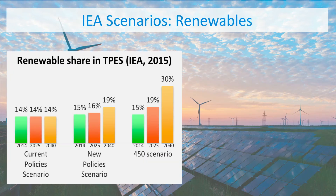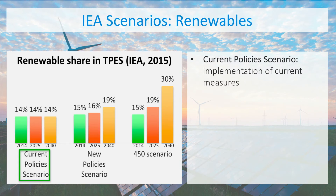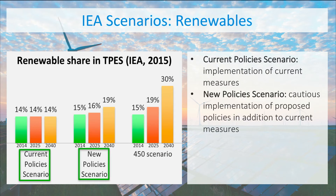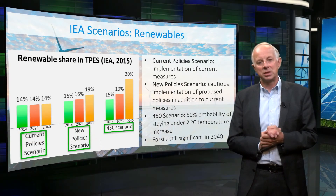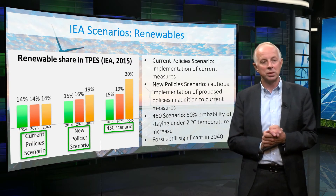Let's look at what happens to renewable energy. In the current policy scenario, the share of renewables sticks at 14% of the total primary energy supply all the way to 2040. In the new policy scenario, we notice a decent increase in the share of renewables to 19%. But in the 450 scenario, we notice the highest increase to 30%. For all three scenarios, there is still a significant role for fossil fuels in 2040.